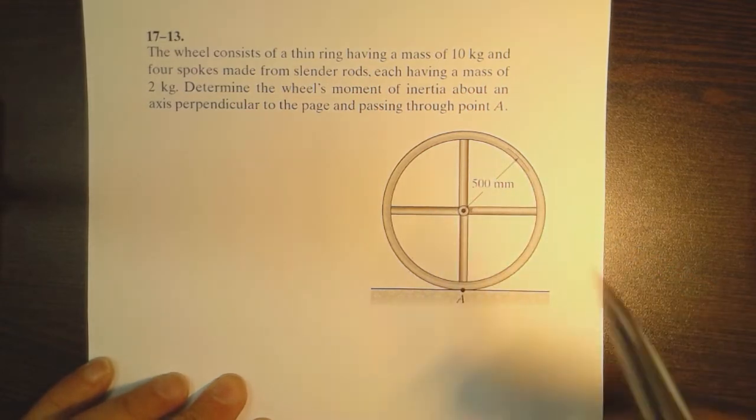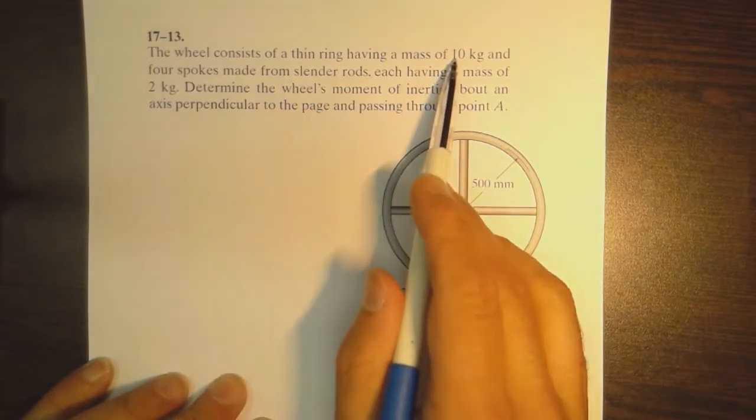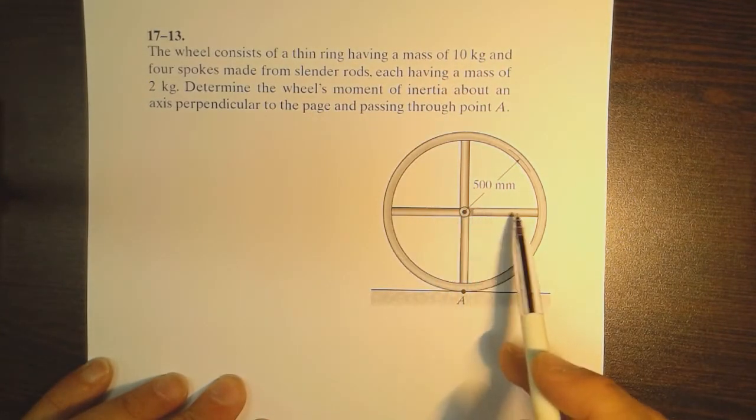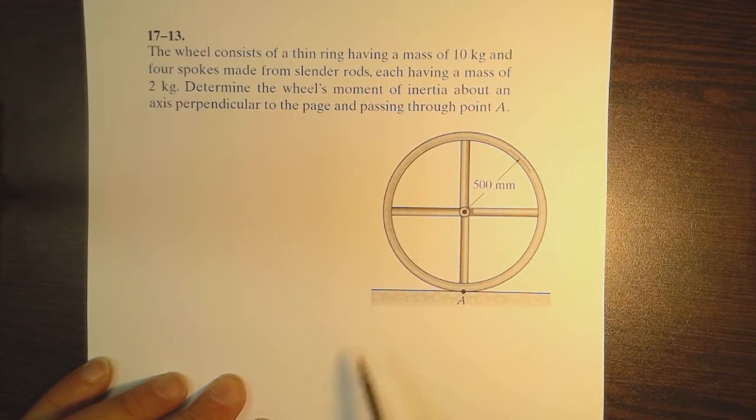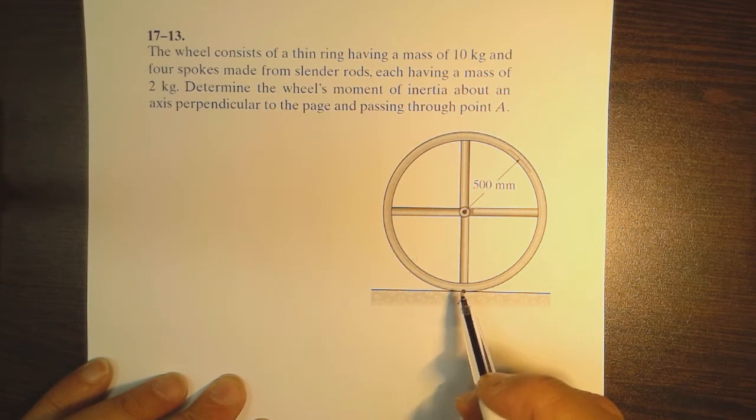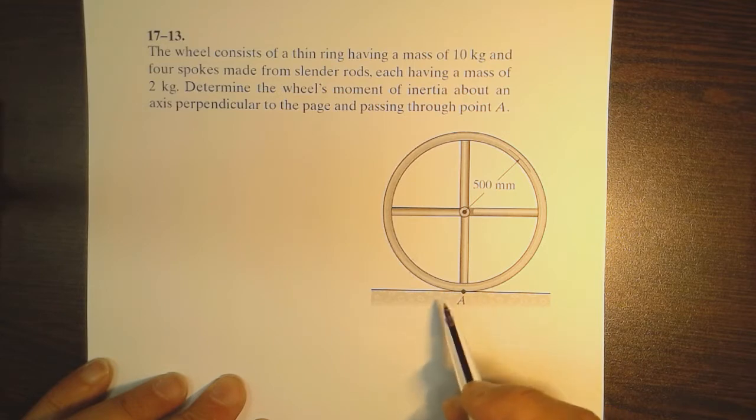The mass of the ring is 10 kilograms while the mass of the slender rods is two kilograms. It is required to find the moment of inertia of the wheel around an imaginary axis extending out of the paper going through point A.